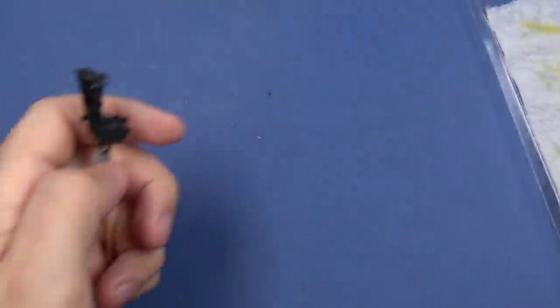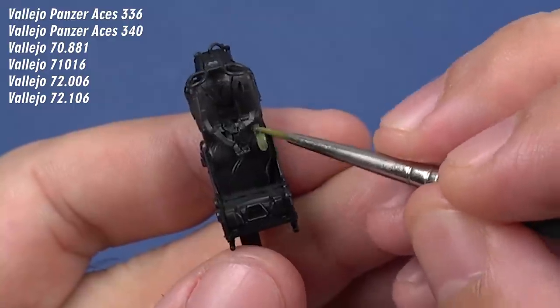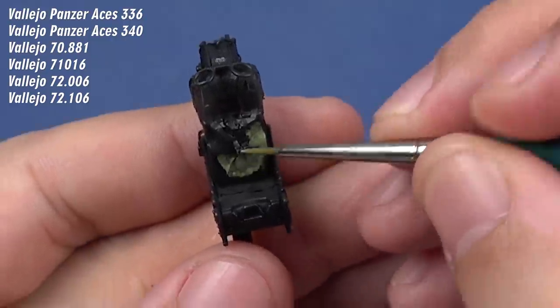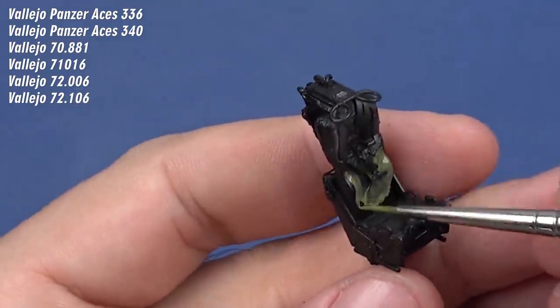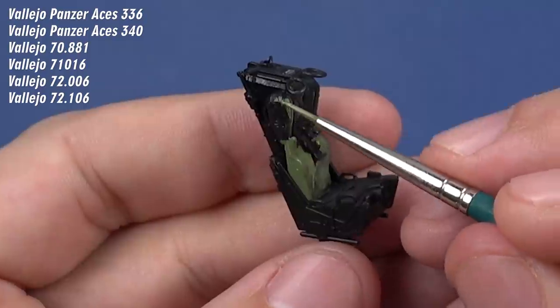I prepared a wet palette tray and start to detail painting. If you are interested, here is the list of paints I use to paint the seats.